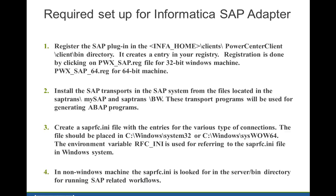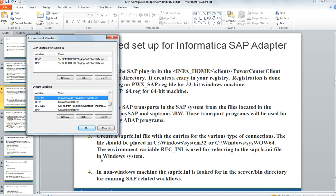The next step is configuration of the saprfc.ini file. There is an environment variable called RFC_INI that needs to be set, which points to the directory where your saprfc.ini file would be placed. In my case, RFC_INI points to the SysWOW64 directory since mine is a 64-bit machine. If your environment doesn't have this RFC_INI variable, you will have to configure it. If your server is also running on a 64-bit Windows machine, you need to specify the RFC_INI variable. If your server is on a Unix-based machine, it will automatically pick it up from the server/bin directory.